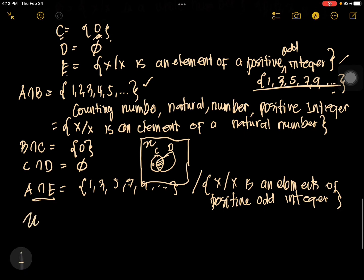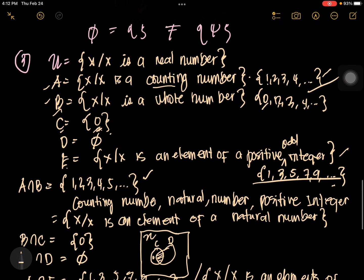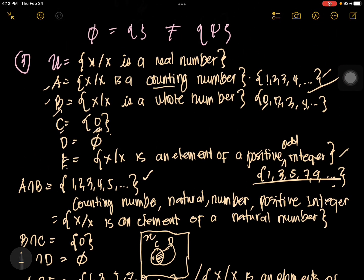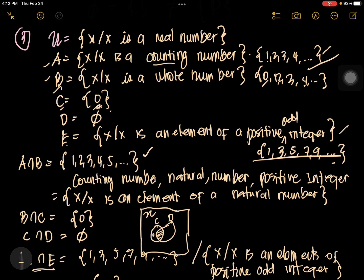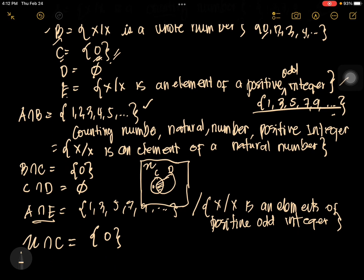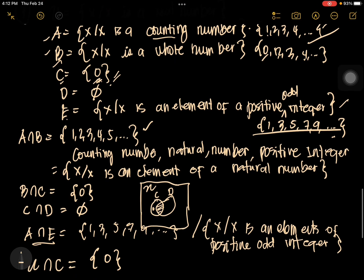What is the intersection of the universal set and set C? Our universal set contains all real numbers, and set C is only {0}. Obviously, the answer is 0, or set C itself. The real numbers include 0, and C is {0}, so the common is 0. That is our example number 3. You can review this if you still have confusion — feel free to ask questions so we can clarify as soon as possible.